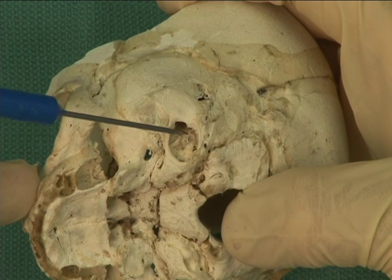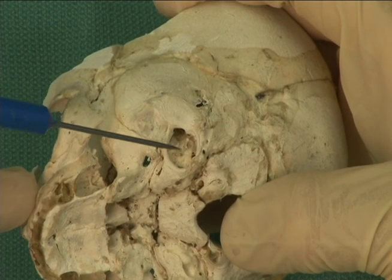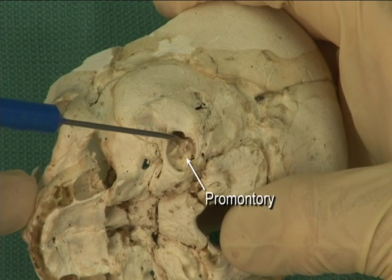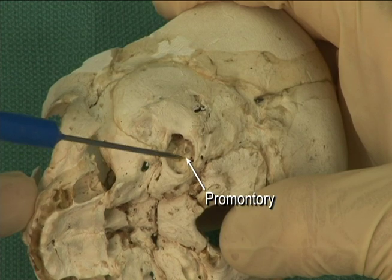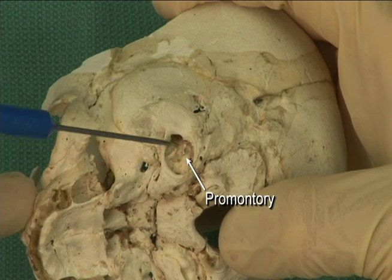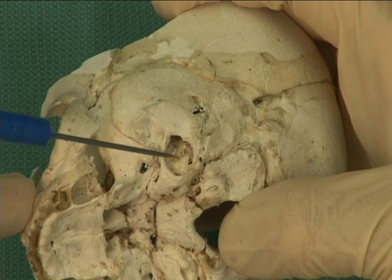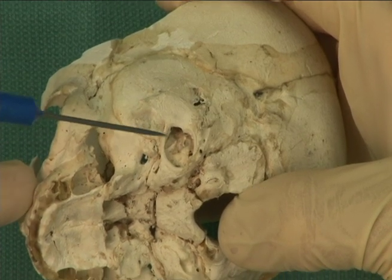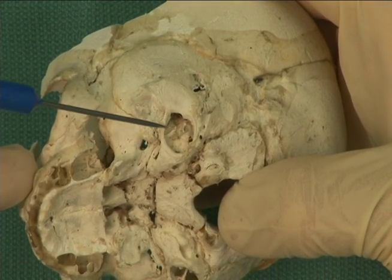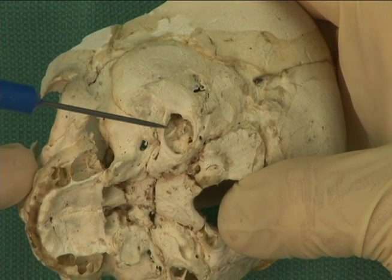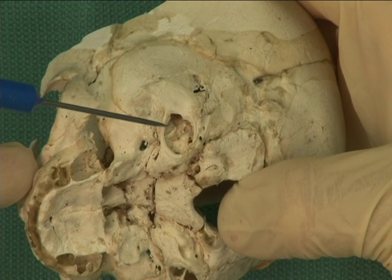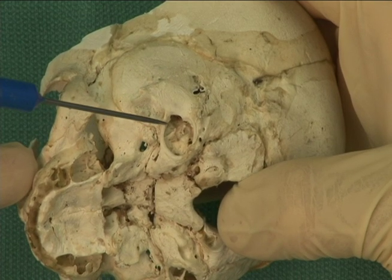A bulge, called the promontory, forms a major part of the medial wall of the middle ear cavity. This is formed by the bony outer wall of the inner ear, and it has two openings.